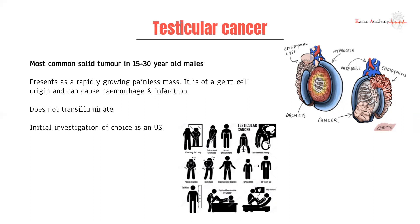Testicular cancer does not transilluminate, since it's a solid mass and not a fluid-filled space. The initial investigation of choice is always an ultrasound. Risk factors include undescended testes, which carry a very high risk of malignant transformation, as well as enlargement of the breasts due to issues with the testosterone ratio, back pain, and a heavy feeling of the scrotum.